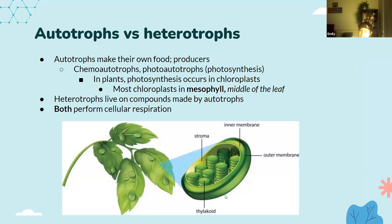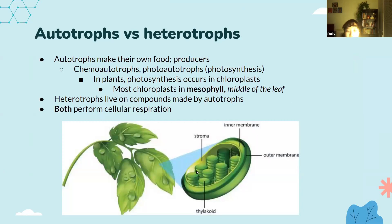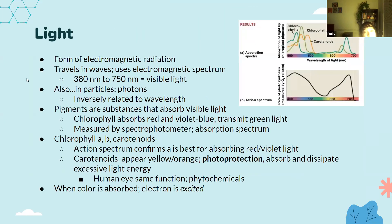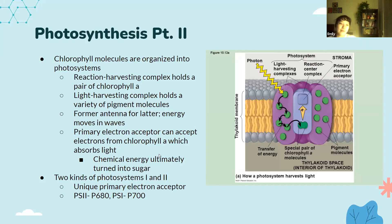The thylakoids are like stacks that capture light, while the actual process of carbon fixation happens in the space between the thylakoid and the outer membrane — the stroma. Chlorophyll is the pigment found in chloroplasts, and it absorbs pretty much every kind of light well except for green light, which is why plants appear green. The main thing about photosynthesis is that all of the chemical reactions are centered in protein complexes called photosystems. Different kinds of photosystems attract light of different wavelengths.